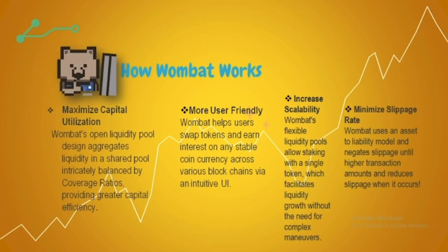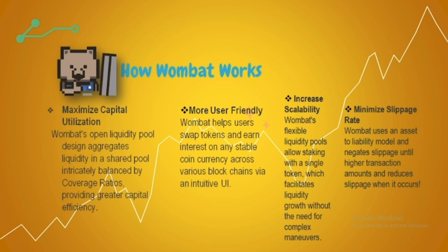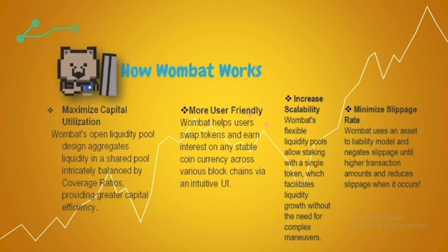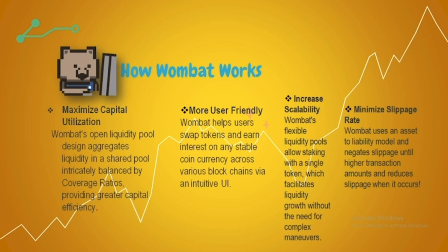How does Wombat work? To maximize capital utilization, Wombat's open liquidity pool design aggregates liquidity in a shared pool, intelligently balanced by coverage ratios, providing greater capital efficiency. It is more user-friendly — Wombat helps users swap tokens and earn interest on any stable coin currency across various blockchains. It also increases scalability, as Wombat's flexible liquidity pools allow staking with a single token, facilitating liquidity growth without complex maneuvers.